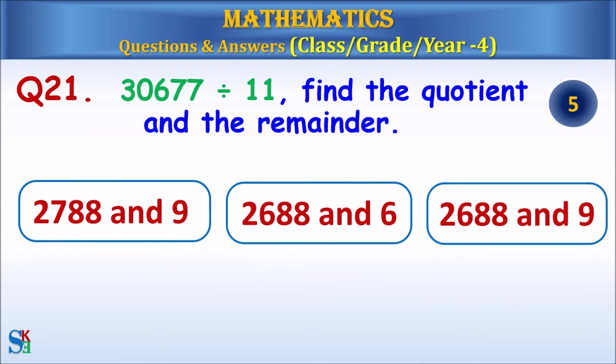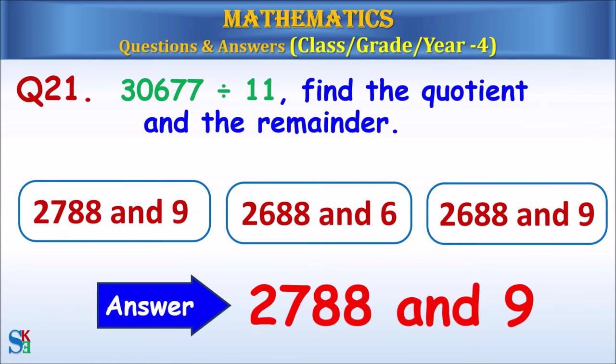Question 21: Find the quotient and the remainder of this equation. The answer is 2788 and 9.